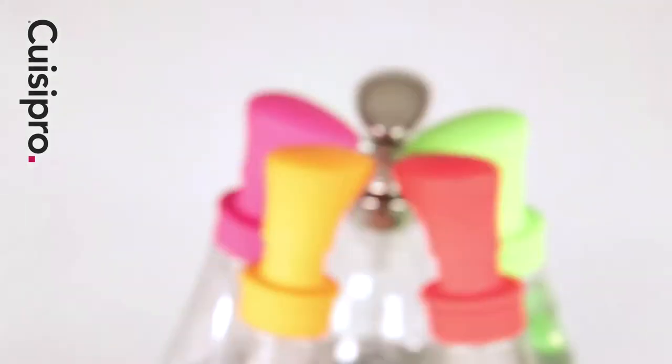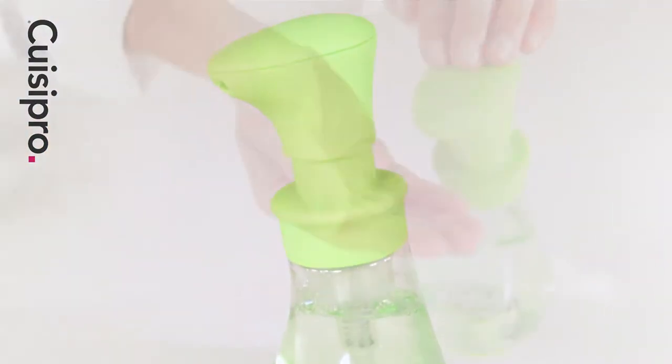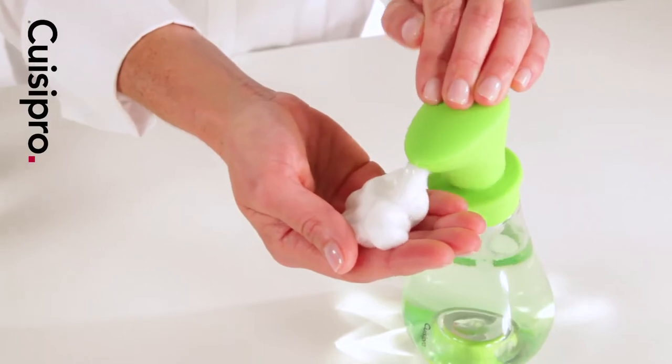Turn liquid soap into foam with the environmentally friendly CuisePro Foam Pump. The foam pump has two fill levels for soap and water, reducing soap usage by up to 75%.